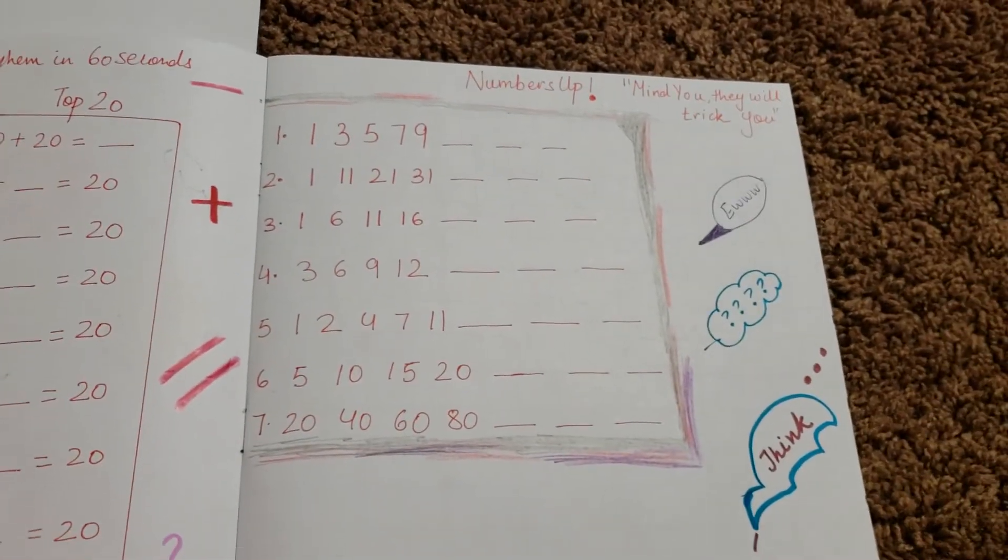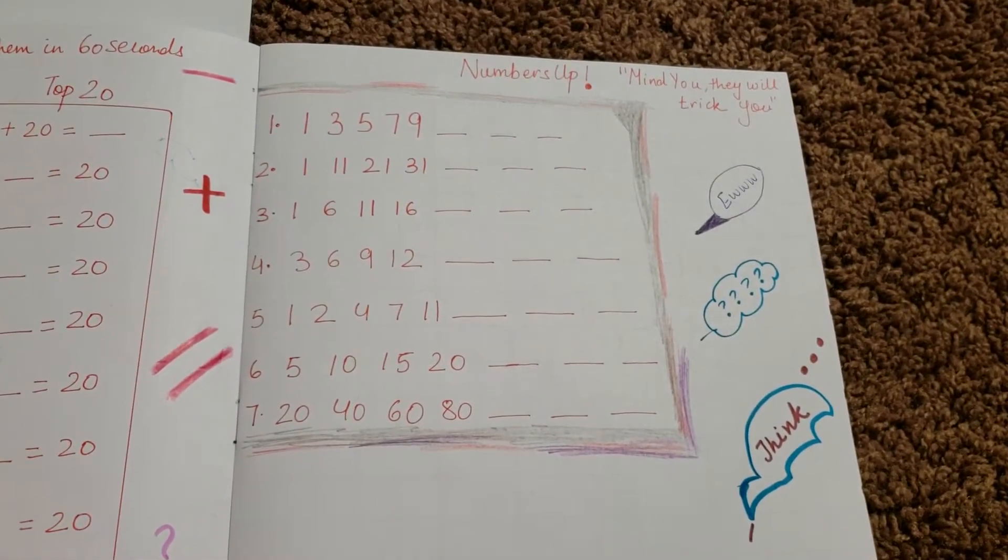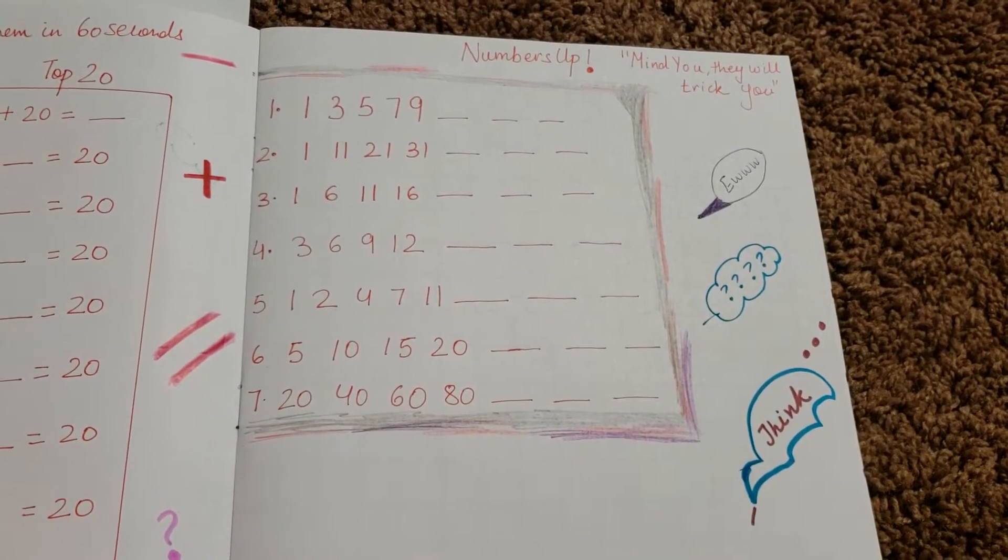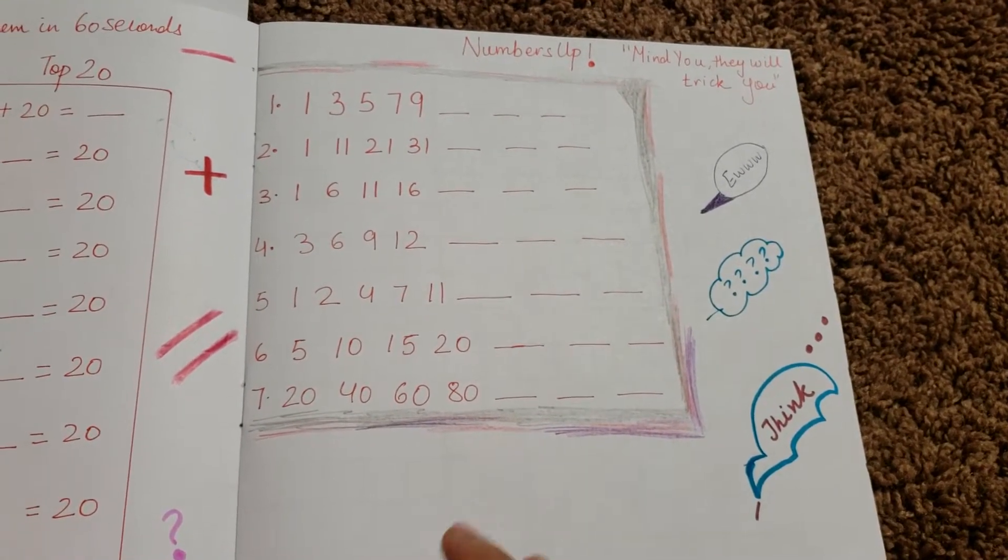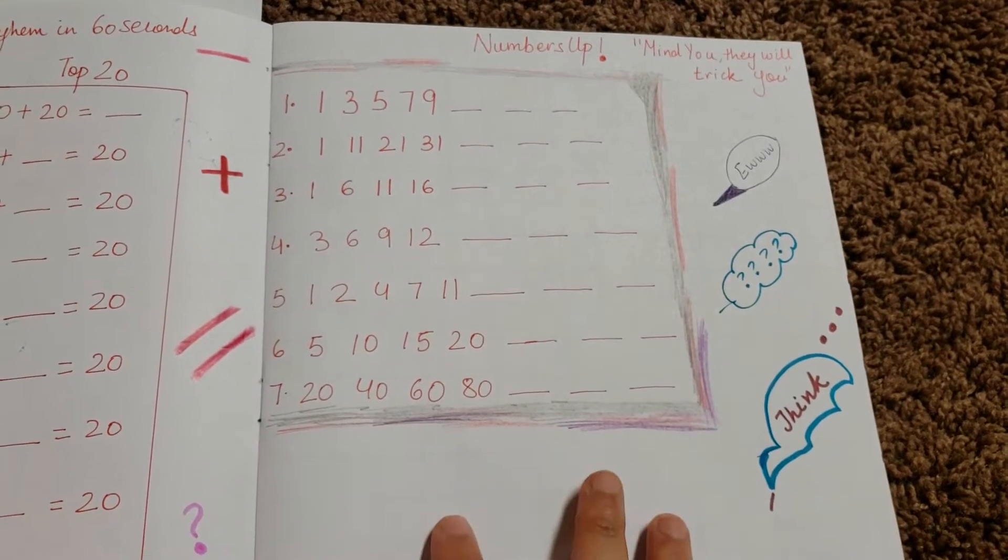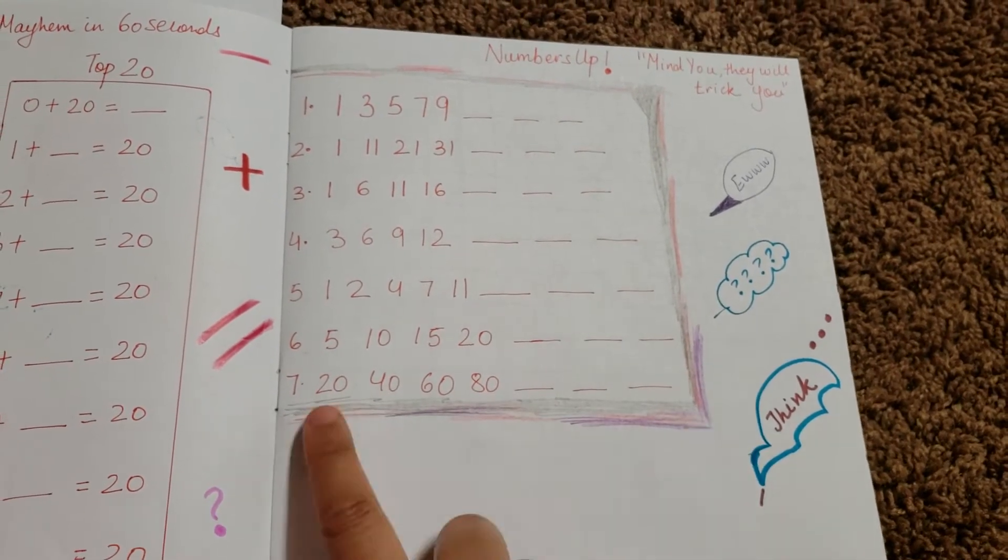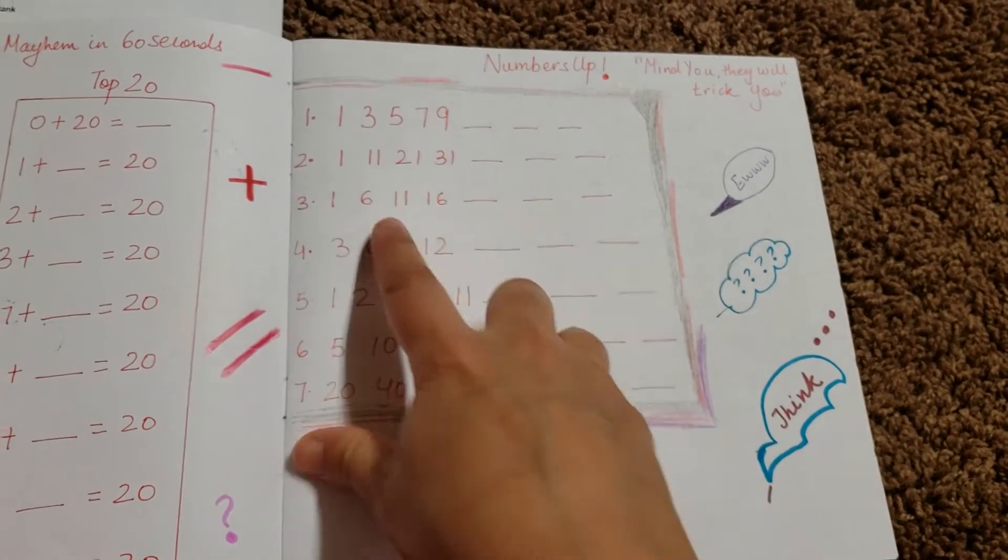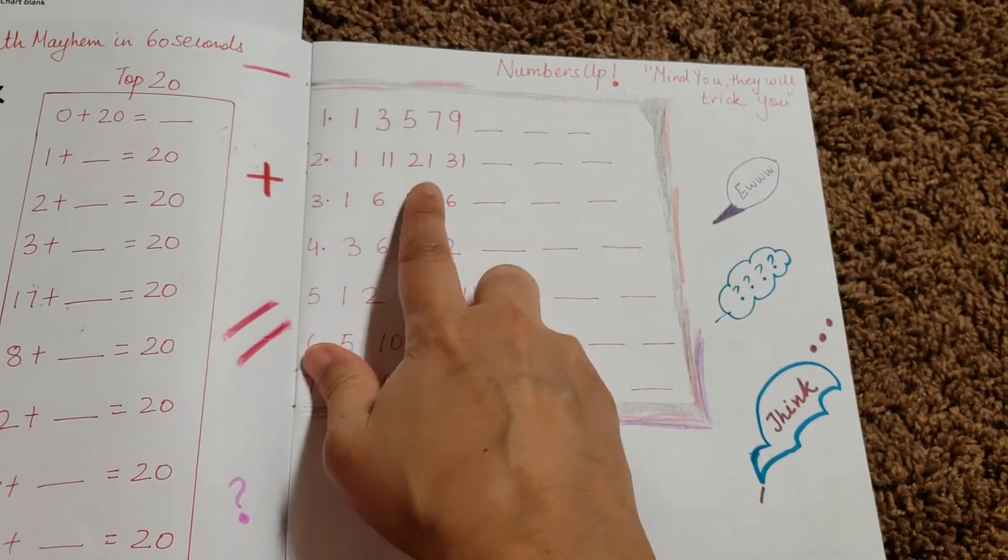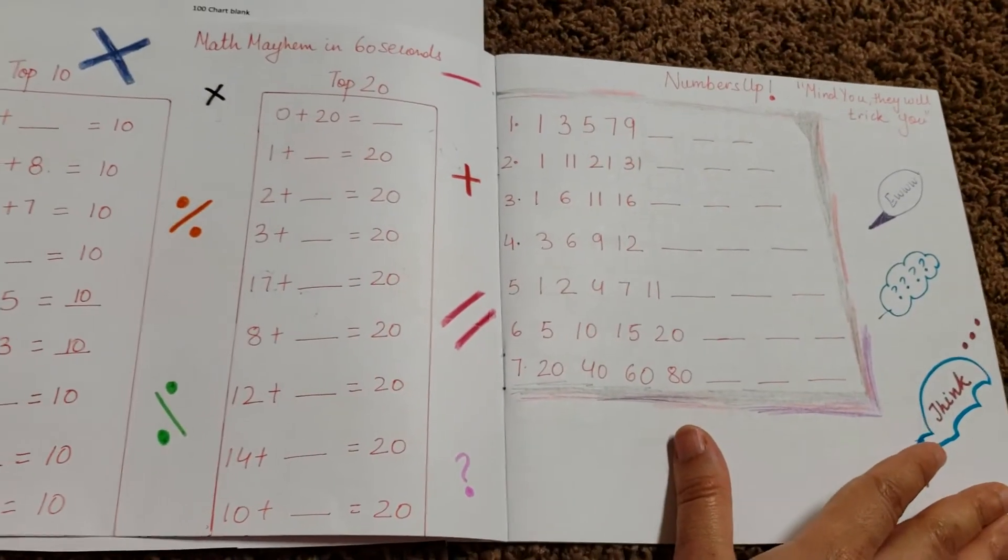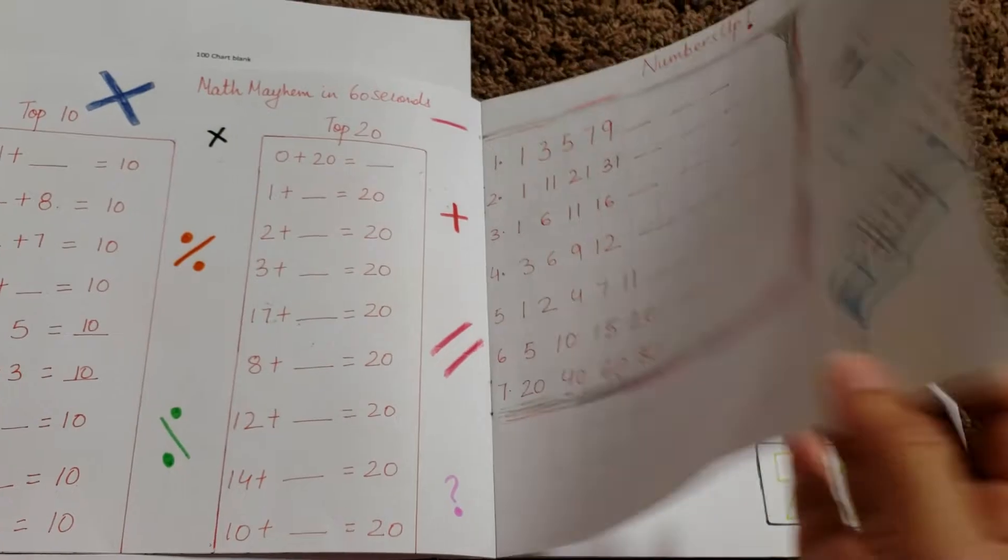Okay. So numbers up, mind you, they will trick you. Okay. So these are all skip counting backward, forwards. So it's going to be super crazy. You can see it's 20, 40, 60, 80. What's going to come in the next three. Then you have 10, 15, 20. What's going to come here. Then one, three, five, seven, nine, one, 11, 21, 31. So two activities, which is with maths, but super confusing.